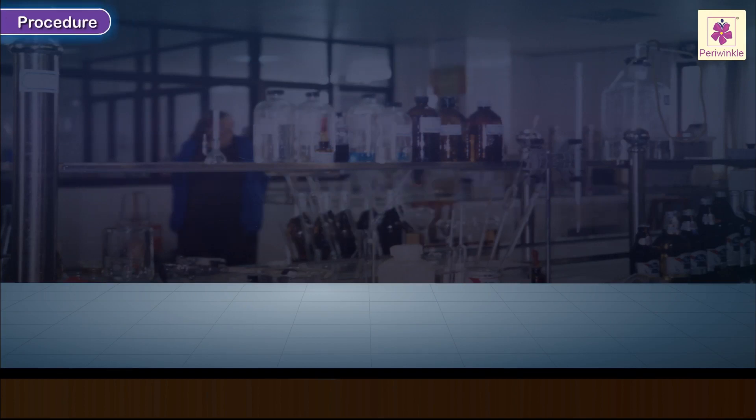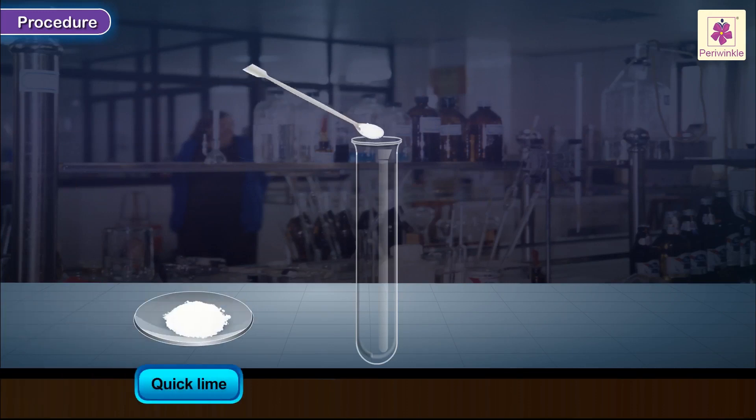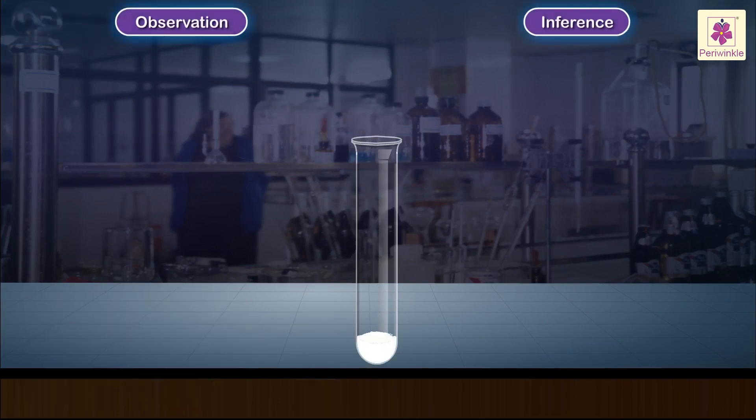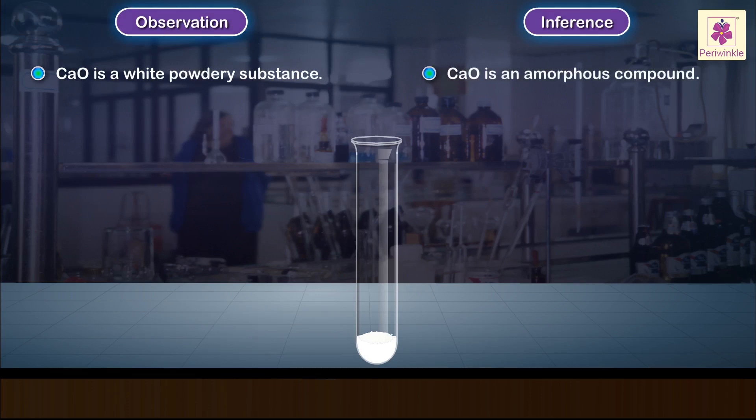Procedure: Take some quick lime in a test tube. Observation: Calcium oxide is a white powdery substance. Inference: Calcium oxide is an amorphous compound.